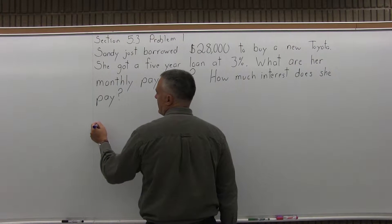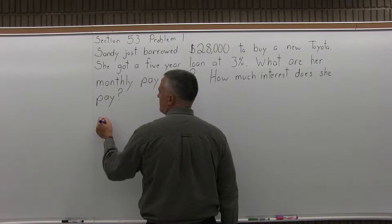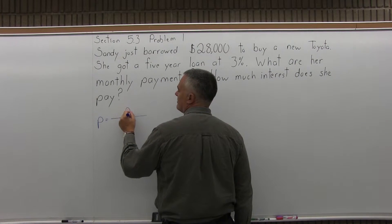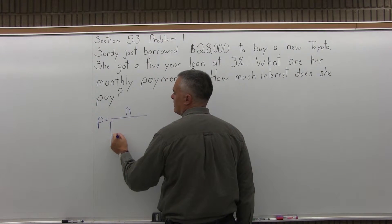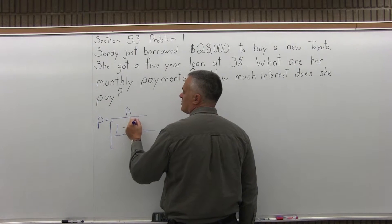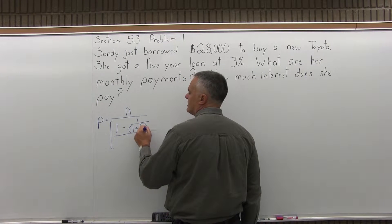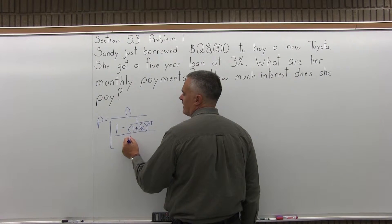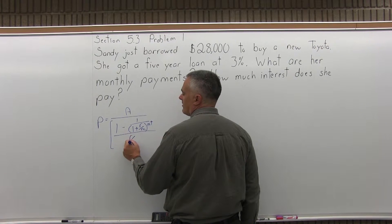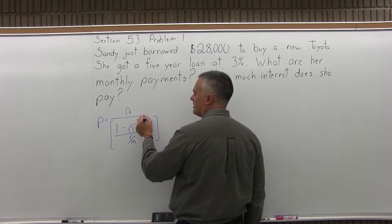You're taking a loan with your payments and the formula is P for payment equals A, the amount borrowed, over 1 minus 1 over 1 plus R over M to the M times T power. And you have an R over M underneath that. It's a big formula.